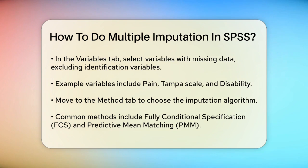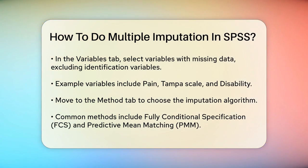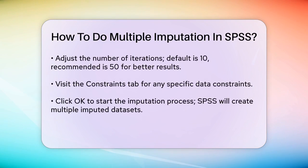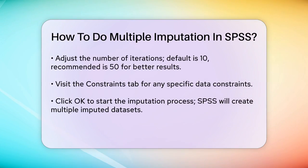After setting up your method, visit the Constraints tab if you need to apply any specific constraints to your data. Once you've configured all the settings, click the OK button to start the imputation process.